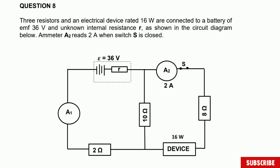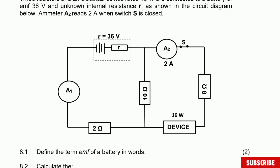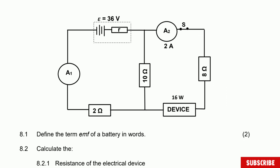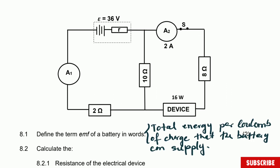This is the question and this is the diagram. Question 8.1: define the term EMF of the battery in words. The EMF is the total energy per coulomb of charge that the battery can supply. There are two marks for the definition and it's an important definition.